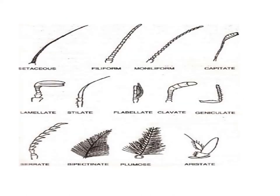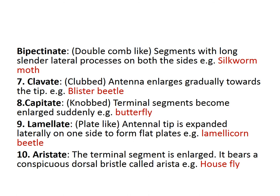The different types of antennae include: setaceous, filiform, moniliform, capitate, lamellate, flabellate, clavate, geniculate, serrate, bipectinate, plumose and aristate. Bipectinate — segments have long slender lateral processes on both sides, forming a double comb-like structure, as seen in silkworms and many moths. Clavate antennae enlarge gradually towards the tip — it is a clubbed type, seen in blister beetles. Capitate or knobbed — the terminal segment becomes enlarged suddenly, as in butterflies and moths.